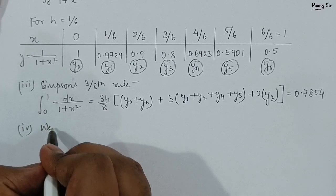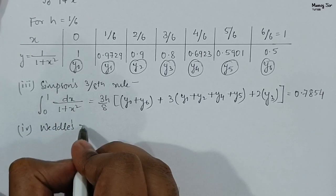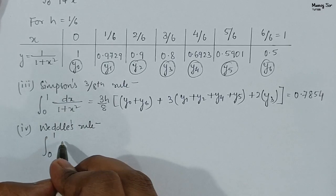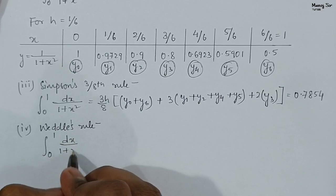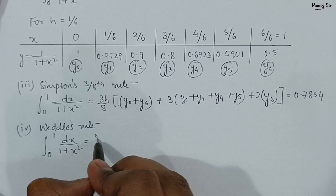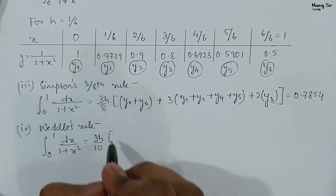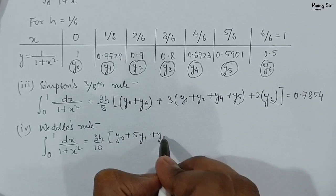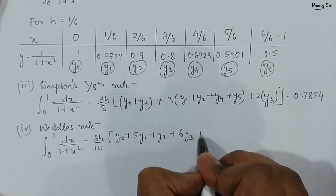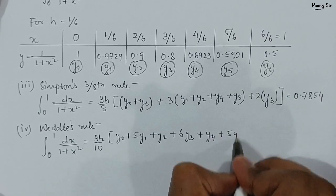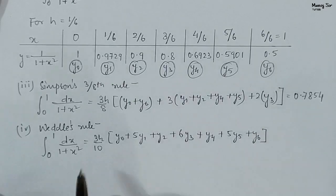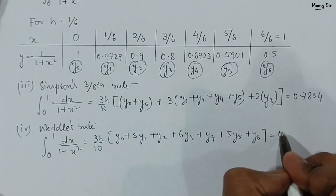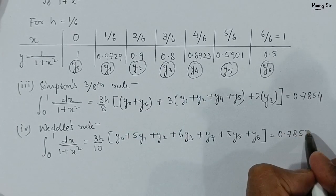Now the fourth method: Weddle's rule. The formula is ∫₀¹ dx/(1+x²) = 3h/10 × [y₀ + 5y₁ + y₂ + 6y₃ + y₄ + 5y₅ + y₆]. Putting in the various values, we get the value of this integration as 0.7853.